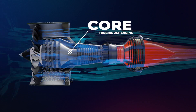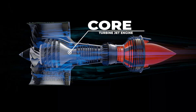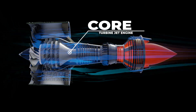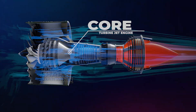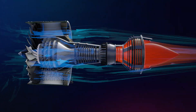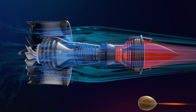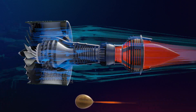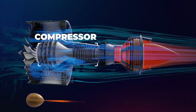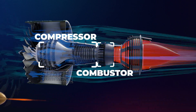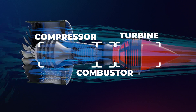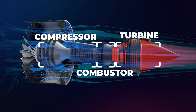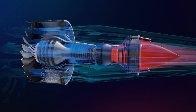The core of a jet engine is the gas generator that supplies high-pressure gas fuel to drive the turbine. This system includes the compressor, combustor, or combustion chamber, and turbine. Let's first focus on the compressor part.